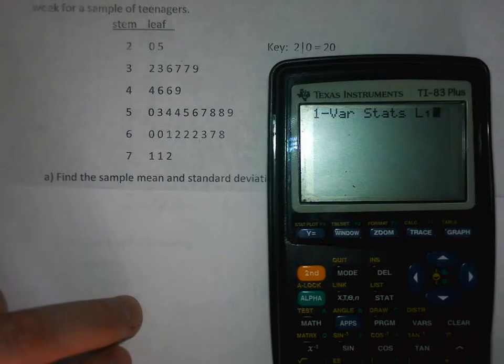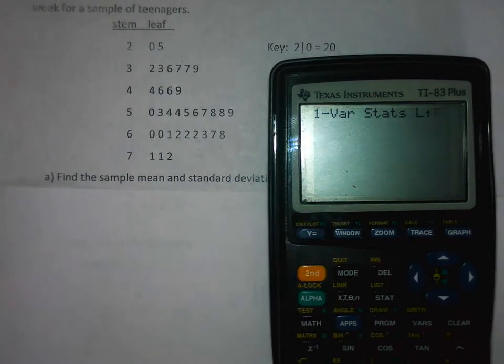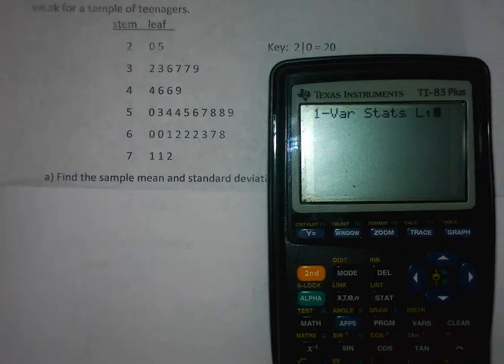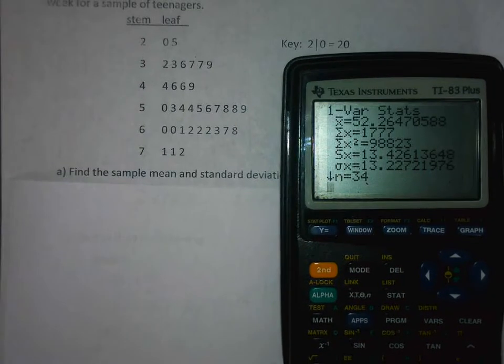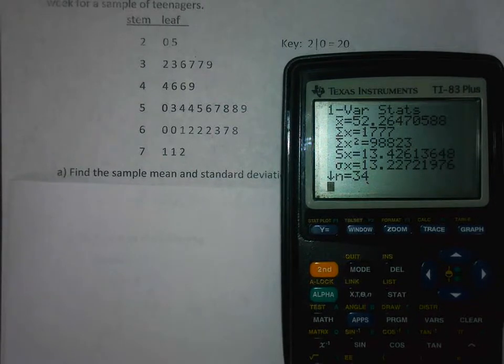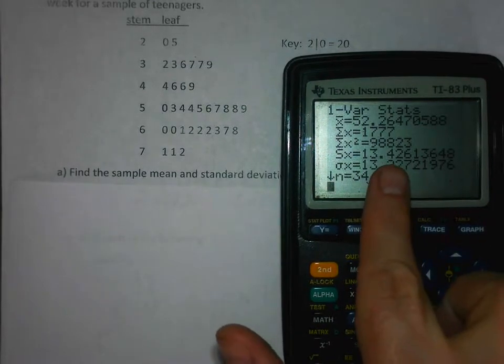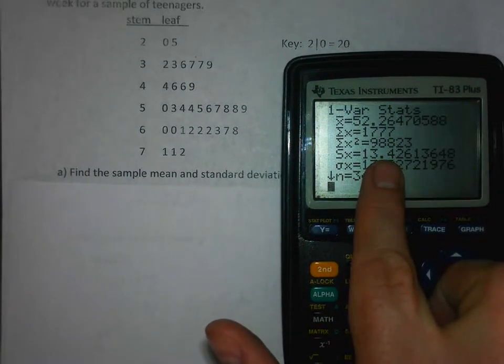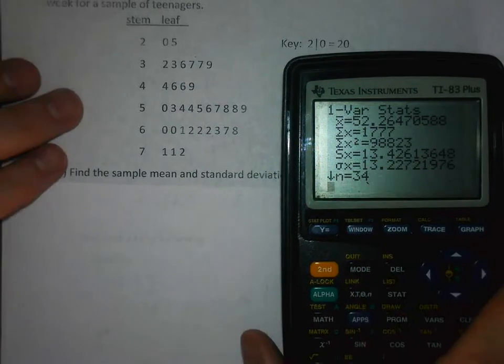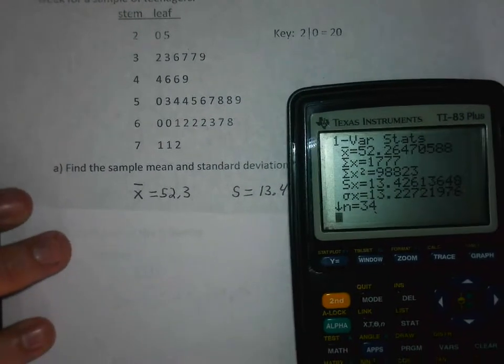Depending on your operating system you may also have on your screen where it says x list - you want that to be L1. You might have a frequency option; either leave that blank or put a 1. Depending on the operating system, one of those methods should work. Press ENTER and it gives me all of these descriptive statistics. So 52.26 is the mean, and the sample standard deviation is 13.4. That's the answer to part a.